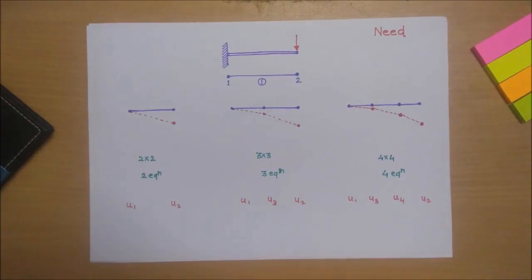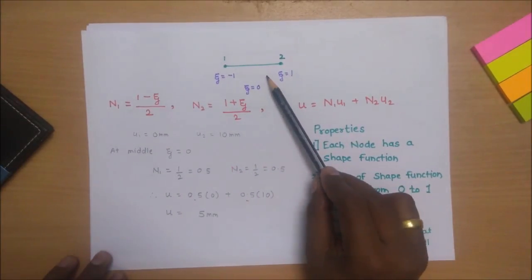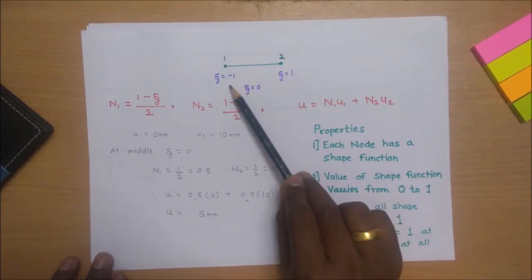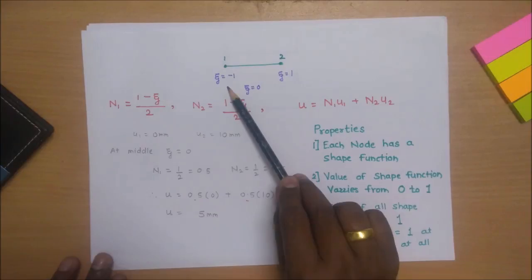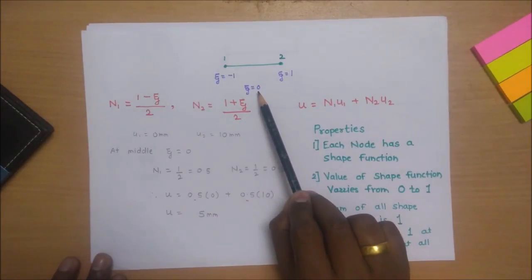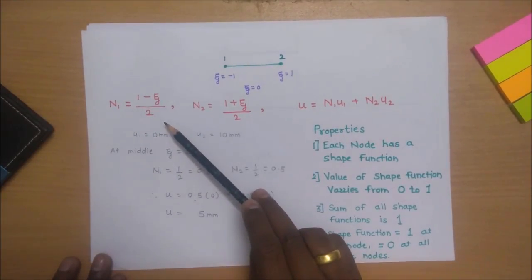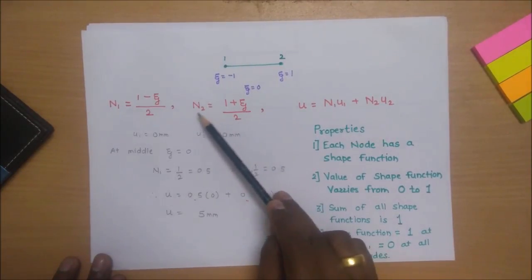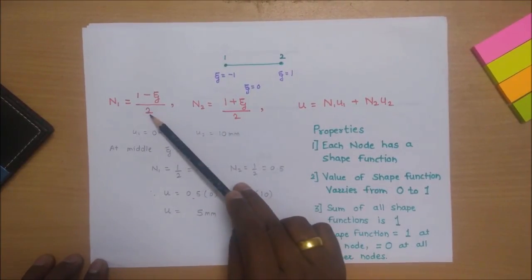Let's look at shape functions. For element one, between node one and node two, the natural coordinate zeta varies from minus one to plus one, with zero at the middle. We derive shape function N1 = (1 − ζ)/2 and N2 = (1 + ζ)/2. These are the shape functions for node one and node two respectively.